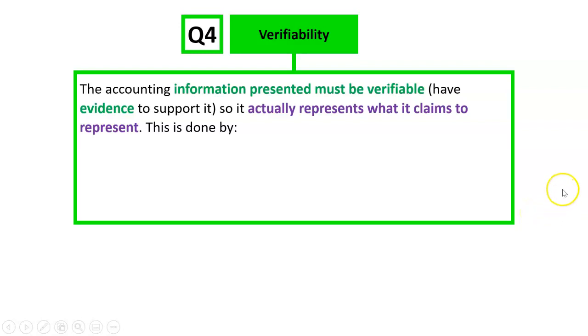We've got to have proof when we do things in business. So what does that mean? It means the accounting information presented must be verifiable, or what we say is, have evidence to support it. So it actually represents what it claims to represent.